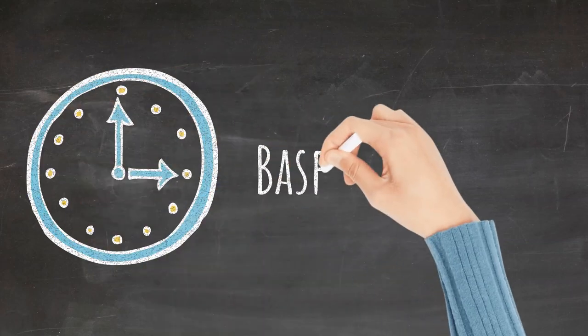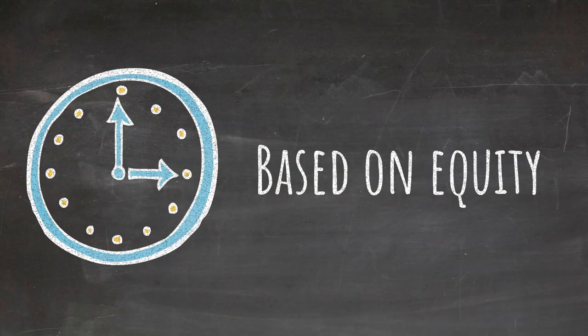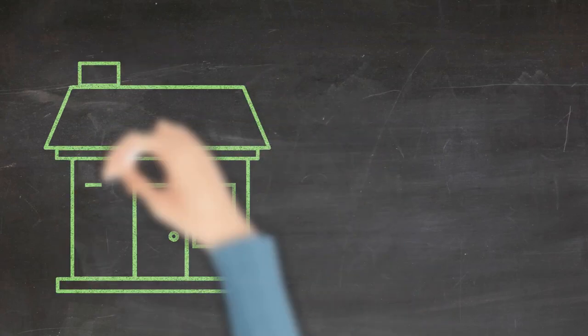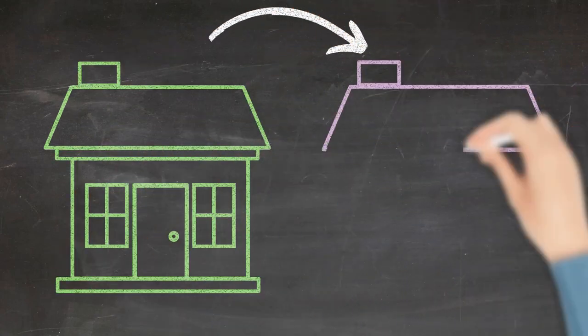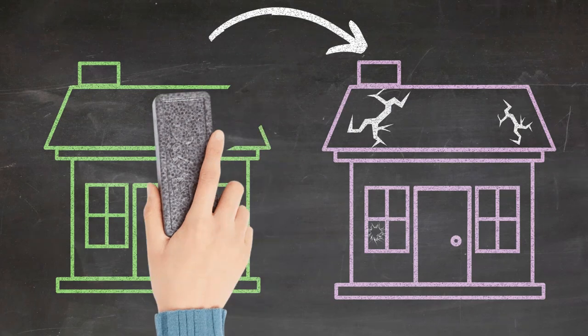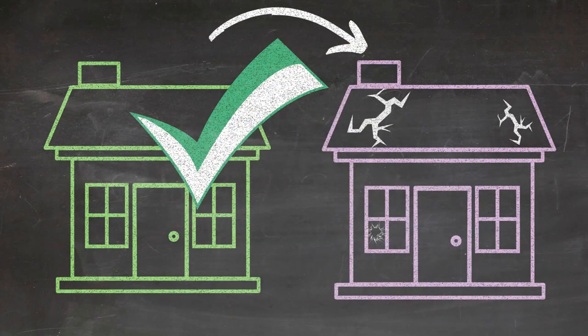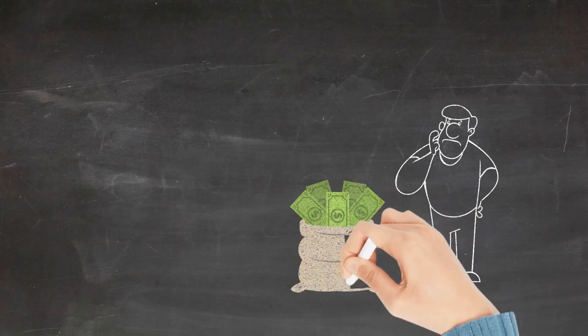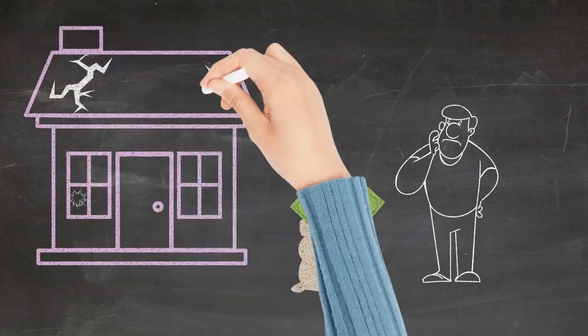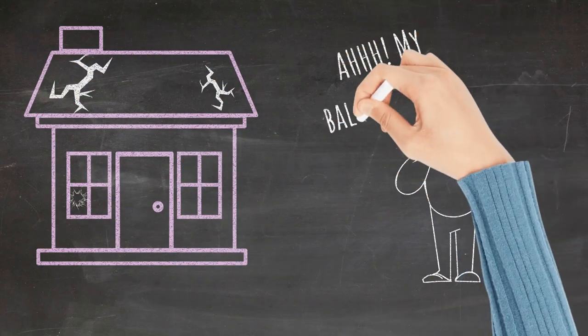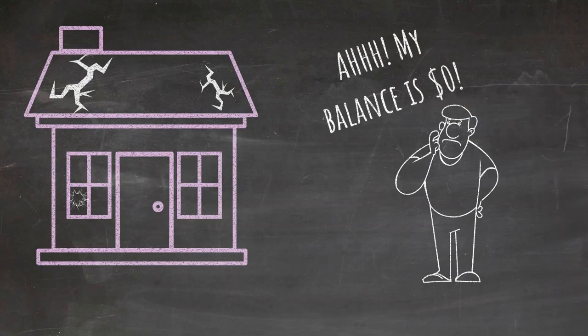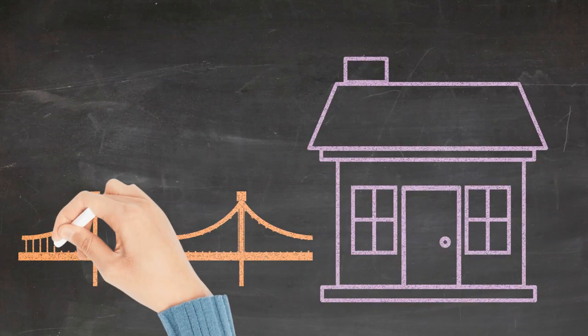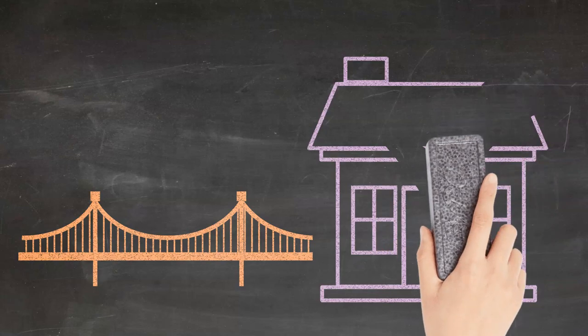Bridge loans are temporary loans based on equity to get your project completed and/or to get into your next project while you wait for your current one to close. For example, let's say you have a hard money loan for a fix and flip but you've run out of money. Well, you can get a bridge loan to help you finish your project.